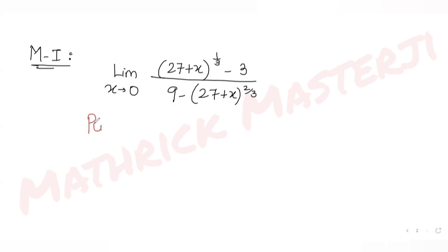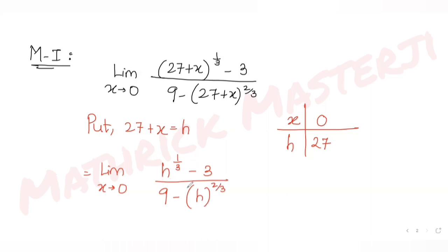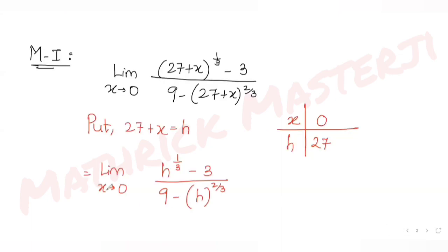If I put 27 + x = h, my limit variable also changes. It was tending to 0; if I put x = 0, h becomes 27. So the expression becomes limit h tends to 27 of h^(1/3) minus 3, divided by 9 minus h^(2/3). We should write h tends to 27, not x tends to 0.